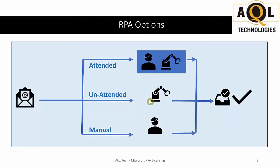Attended RPA means that the user is logged into the machine and that's when the RPA kicks off on the user's workstation. Unattended RPA means that the user is not even logged into the workstation — the RPA kicks off by itself and it could be on the user's machine or on a remote machine.